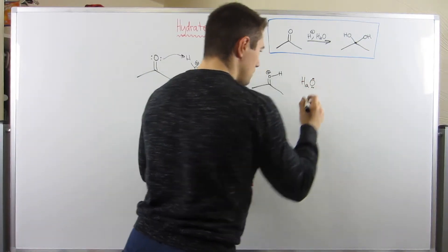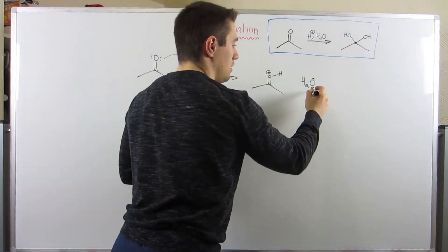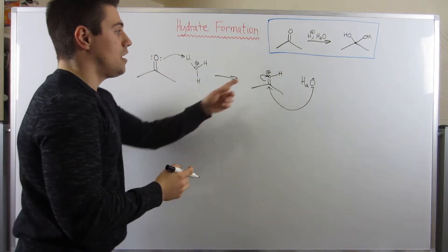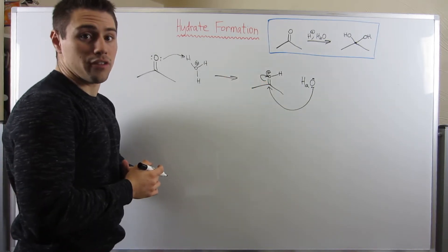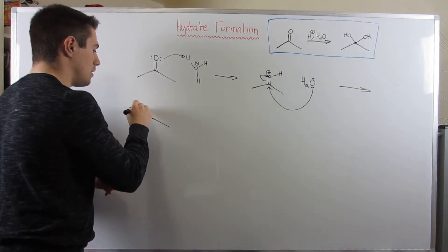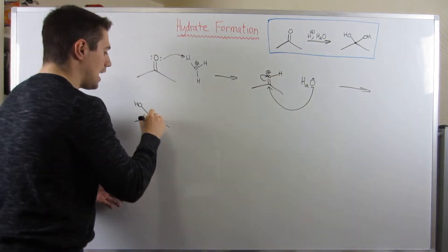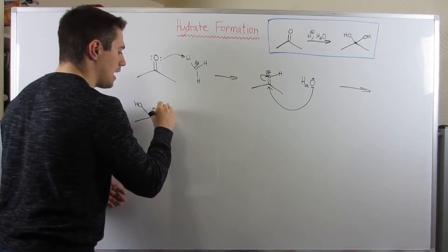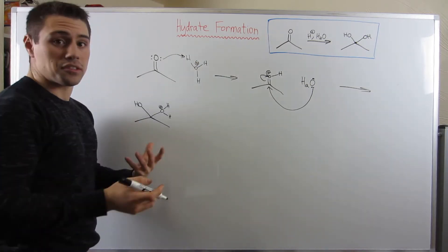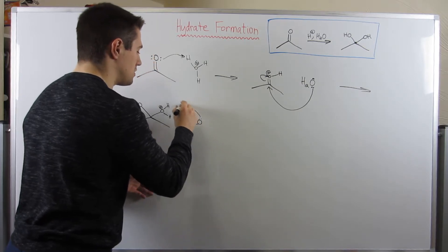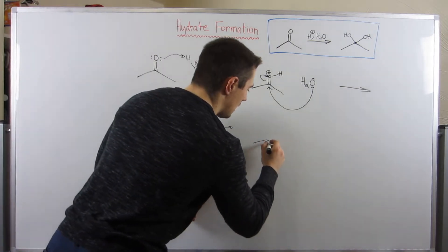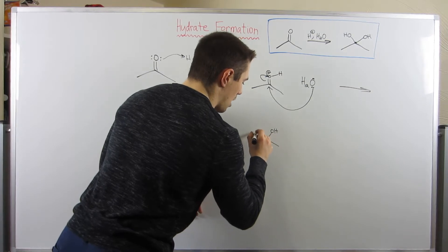Now water is our nucleophile in this case. Let's swoop in and attack our trigonal planar carbonyl carbon that's a little more reactive. Once we do that, we need to kick up this pair of electrons in that double bond. That means we'll have an OH on one side, and we have an oxygen with two hydrogens and a positive charge — that's the water that just came in and attacked. Since we don't have a protonated oxygen in our product, let's clean it up. We have water laying around, so let's have it snatch up one of these protons. Those electrons go back on oxygen, and we finally get our hydrate product.